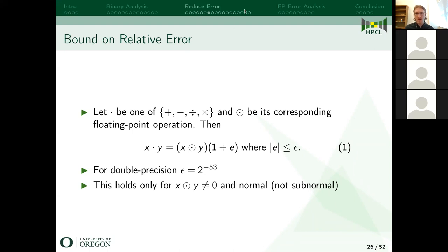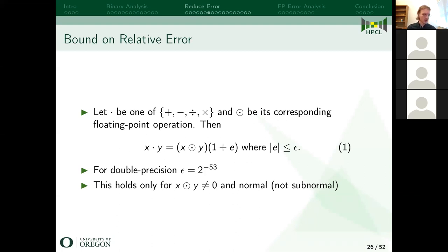Subnormal numbers are numbers which are very close to zero — very small positive or very small negative values. The previous error model is not sound in their case, so we'll talk more about subnormal numbers soon.